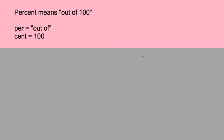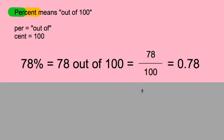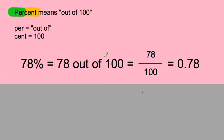The first thing we need to know is that the word percent means out of 100. The part 'per' means out of and 'cent' means 100, so it literally means out of 100. So we read 78% as 78 out of 100, and in fraction form it's 78 over 100.